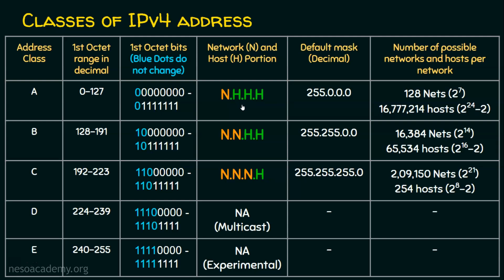For example, if the first octet is 100, any IP address that starts with 100 will belong to the same network. It doesn't care about the remaining three octets. So 100.1.1.5 as well as 100.255.255.5 — both of these computers belong to the same network because class A is mainly focused on the first octet.